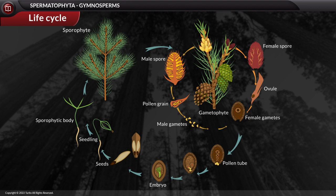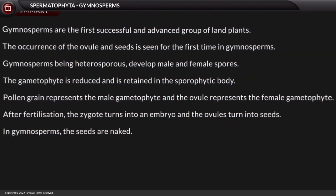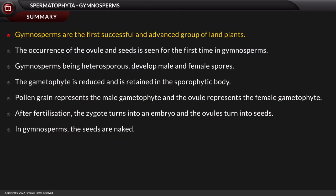In summary, gymnosperms are the first successful and advanced group of land plants. The occurrence of ovules and seeds is seen for the first time in gymnosperms. Being heterosporous, they develop male and female spores. The gametophyte is reduced and retained in the sporophytic body — the pollen grain represents the male gametophyte and the ovule represents the female gametophyte. After fertilization, the zygote turns into an embryo and the ovules turn into seeds, which are naked in gymnosperms.